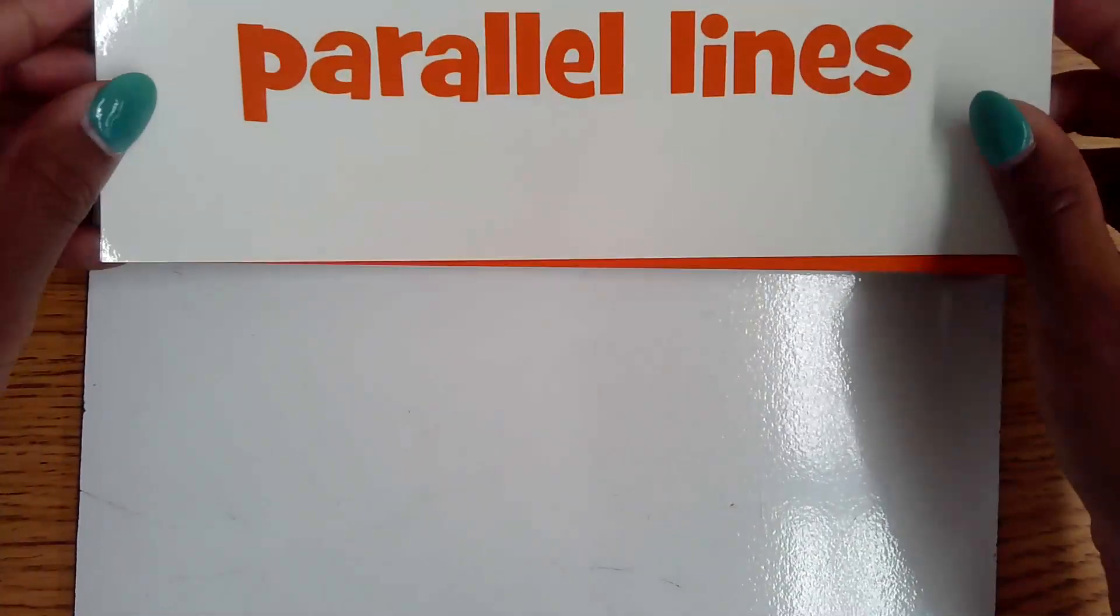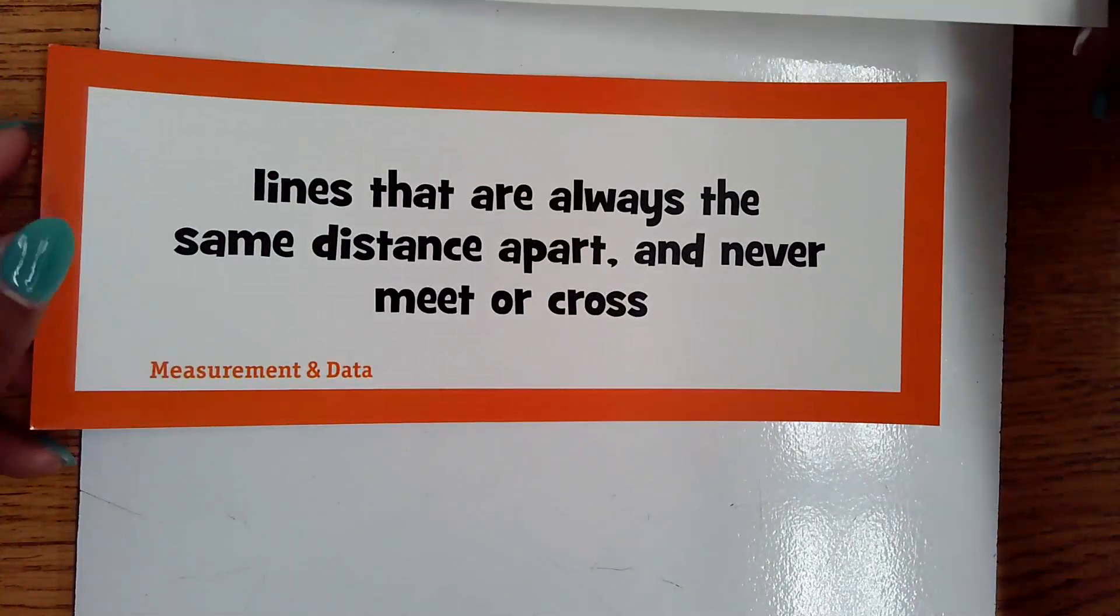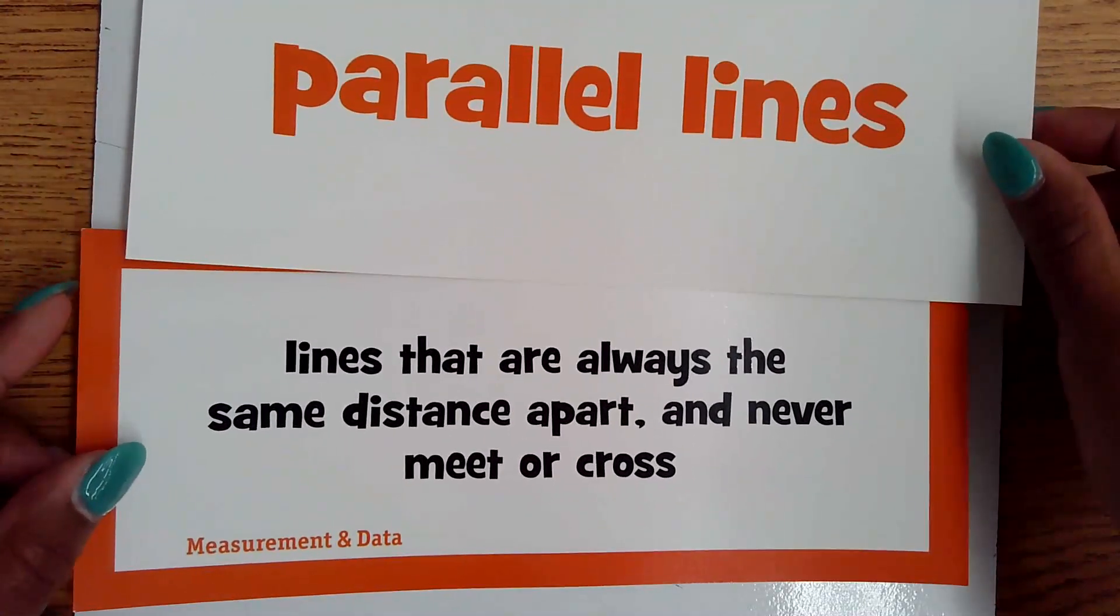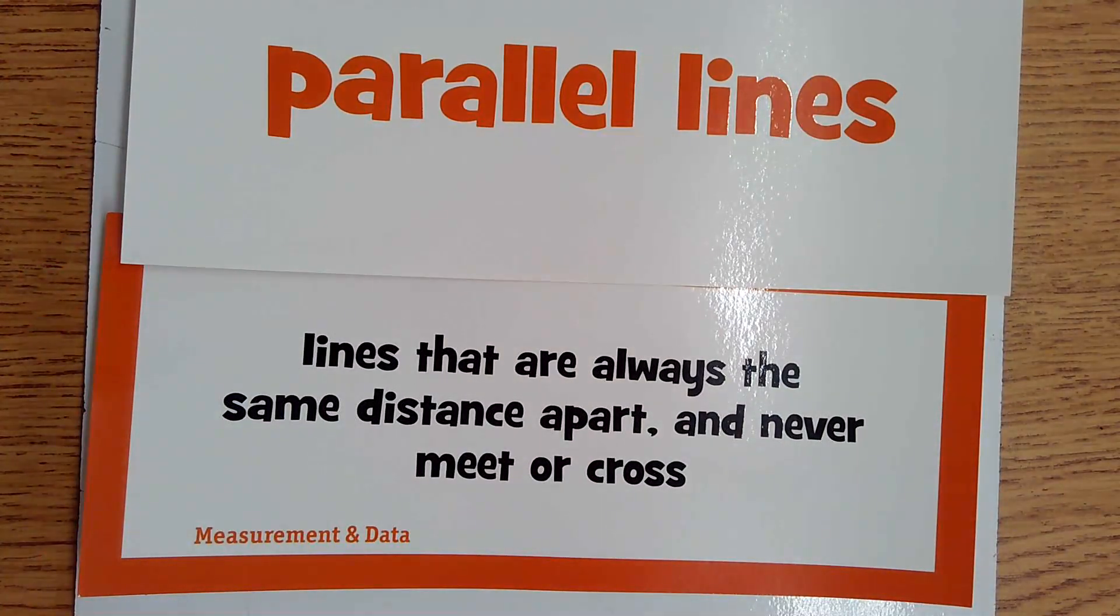Some other vocabulary words that students will be working with involve identifying different attributes on shapes. One vocab word is parallel lines. Parallel lines are lines that are always the same distance apart and never meet or cross.